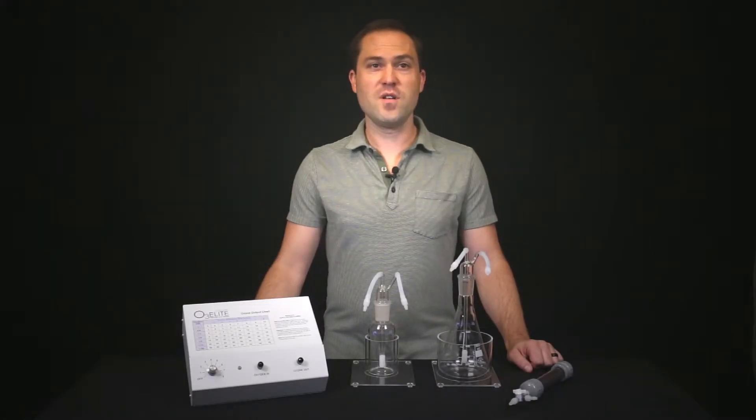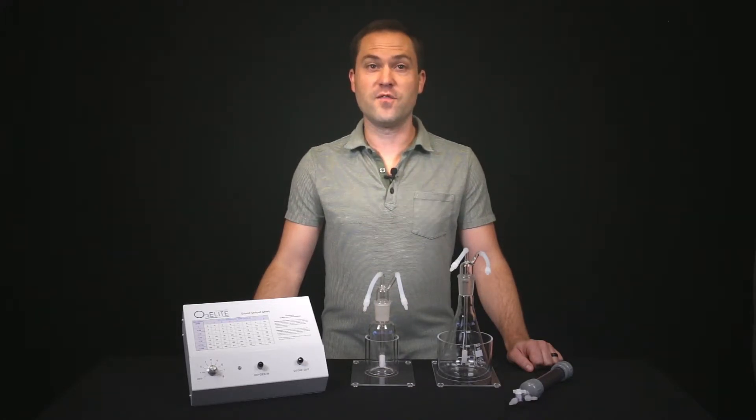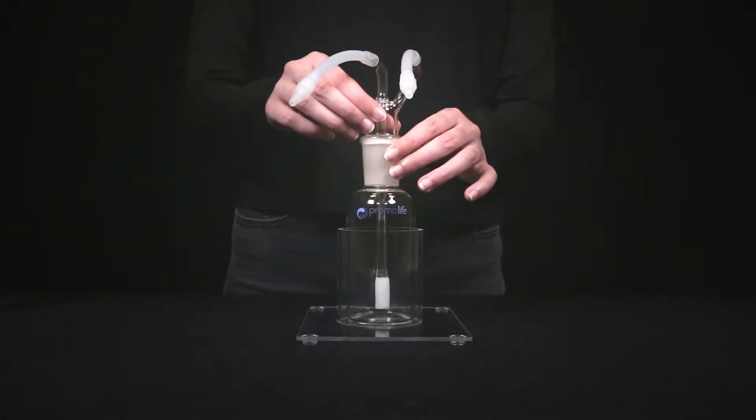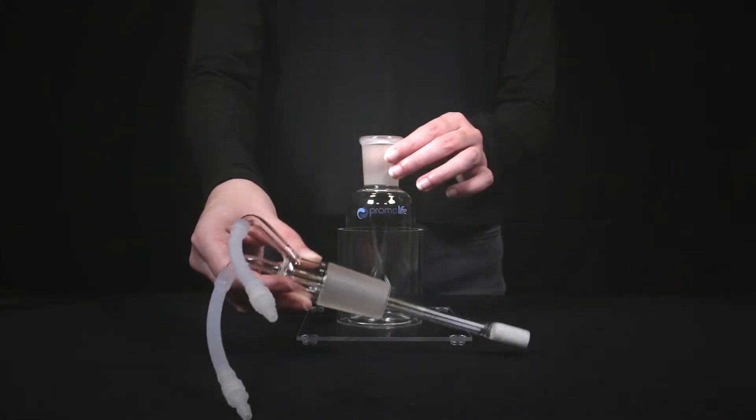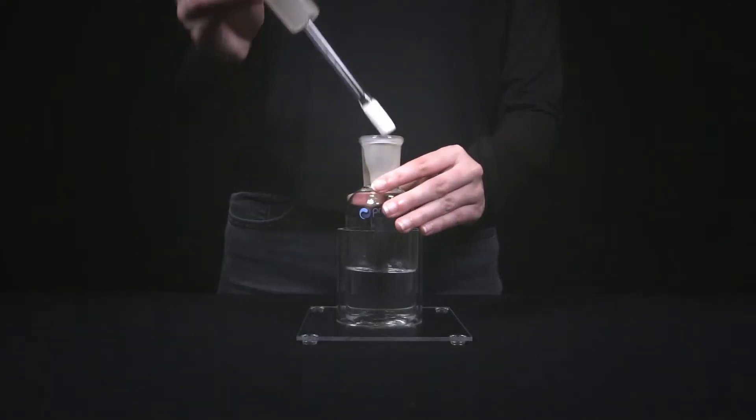Before connecting the humidifier, first you will want to fill it to the correct water level with either distilled or purified water. Distilled water is recommended due to the fact that it will saturate the water faster. For the case of the 200ml humidifier, you will want to take the stem out, fill the jar approximately halfway, put the stem back in the jar, and place the jar in its stand.